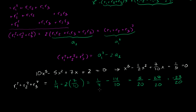You might say: how can the sum of squares of roots be negative? That would be impossible if the roots were real numbers, since squares are always non-negative. But the roots of a polynomial can be complex, and complex numbers squared can be negative. So this result involves complex roots, and their sum of squares is negative 23 over 20.